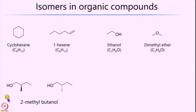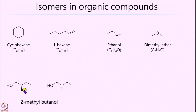One more example of isomers in organic chemistry is 2-methylbutanol, where the only difference is in the way the carbon is arranged — that is, the CH3 group on the second carbon either comes out of the plane or goes behind the plane. This is yet another example of isomers.